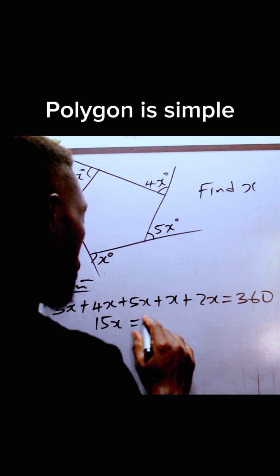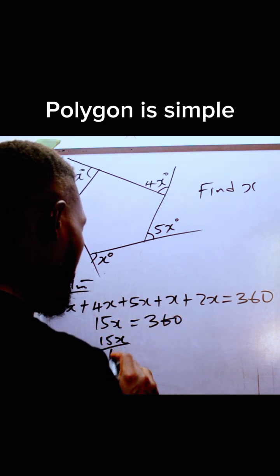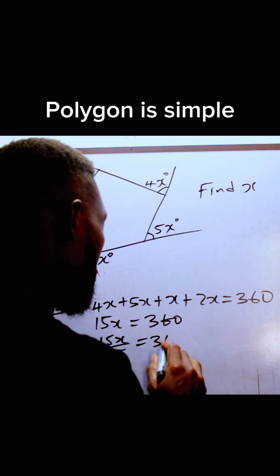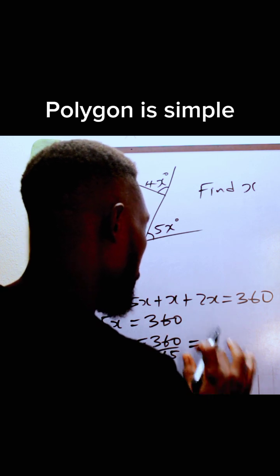15x is equal to 360. 15x over 15 is equal to 360. Please cancel this. This will give us 24.